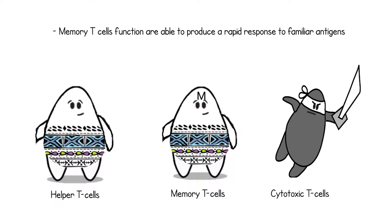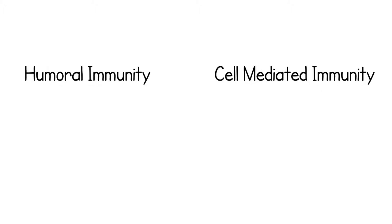Memory T cells function similarly to memory B cells, where they are able to produce a rapid response to the antigen they are specifically produced to recognize. Finally, regulatory T cells work to maintain and ensure that the processes within humoral and cell-mediated immunity occur correctly.